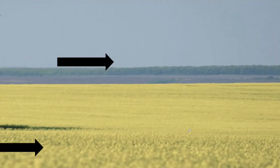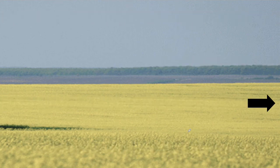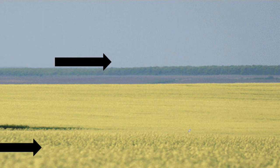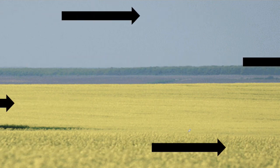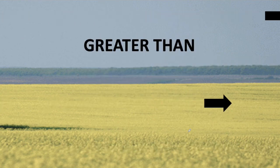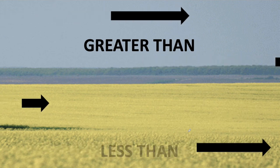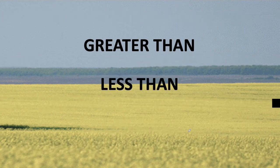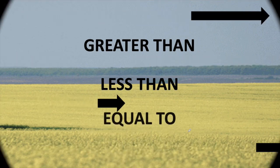Okay, friends, don't forget that when we're comparing numbers, we always read from left to right, just like when we're reading a book. If we want to say that one number is bigger than another, we use the words greater than. If we want to say one number is smaller than another, we use less than. And if two numbers are the exact same, we can say equal to.